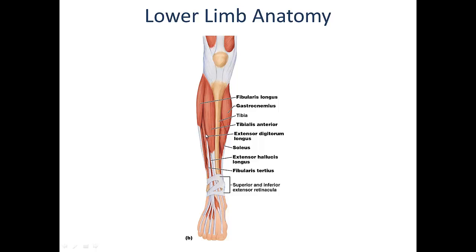Just lateral to this muscle, we have the extensor digitorum longus, which serves to extend the digits, or the toes, of the foot. Between and deep to these two muscles is the extensor hallucis longus, used to extend the big toe. And finally, we have the fibularis tertius, also known as the peroneus tertius. This muscle is used in dorsiflexion and, due to its lateral insertion, is also used in eversion of the foot.